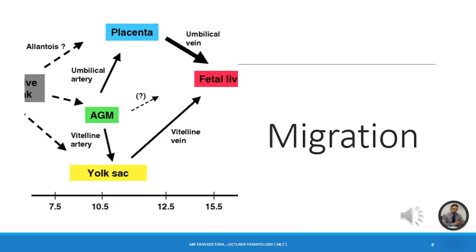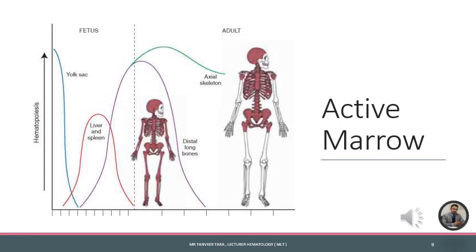The whole process of hematopoiesis begins in the yolk sac and liver and spleen in the initial stages, but with the passage of time hematopoietic stem cells start migrating. During the fourth month of fetal life, the bone marrow develops and responsibility switches over to it. By the time of birth, there is no longer active hematopoiesis in the liver and spleen — all active hematopoiesis is now the responsibility of the bone marrow.